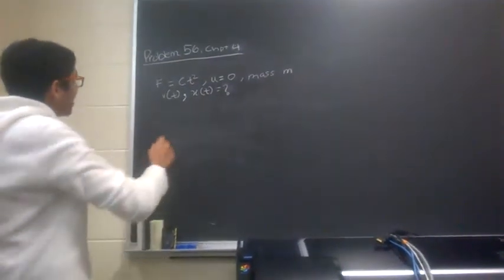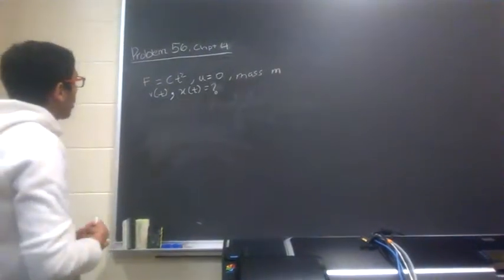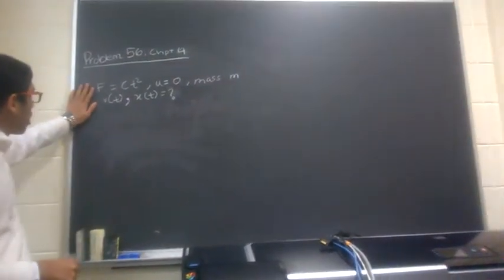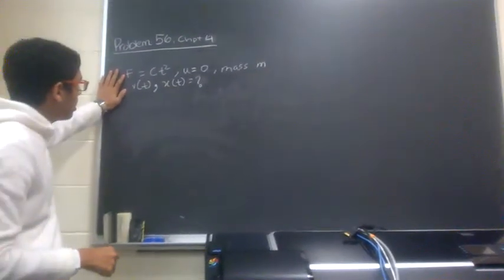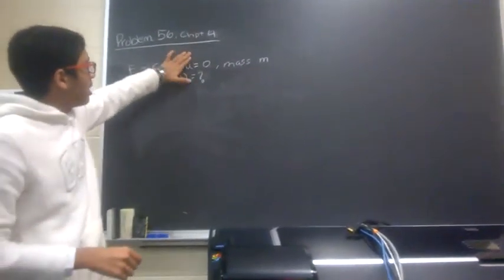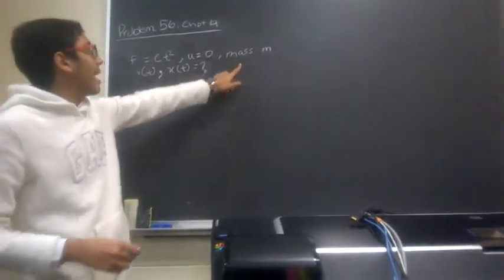Okay, so this is problem 36 from chapter 4. In the problem, we're given force on a body as a function of time, F equal to ct squared, where c is a constant. Then we're given the initial velocity is 0.